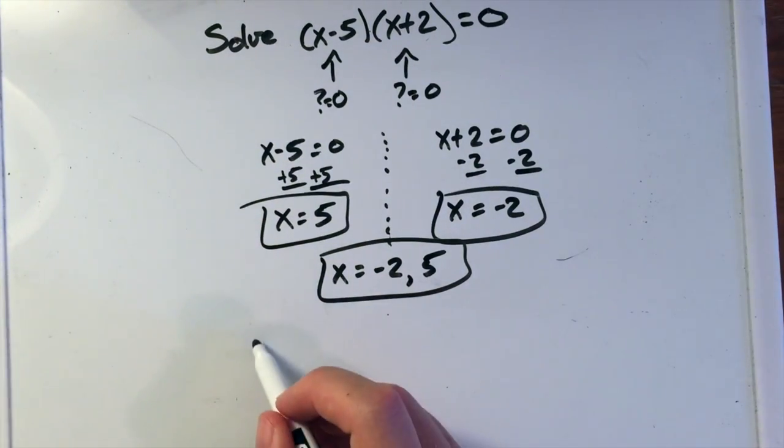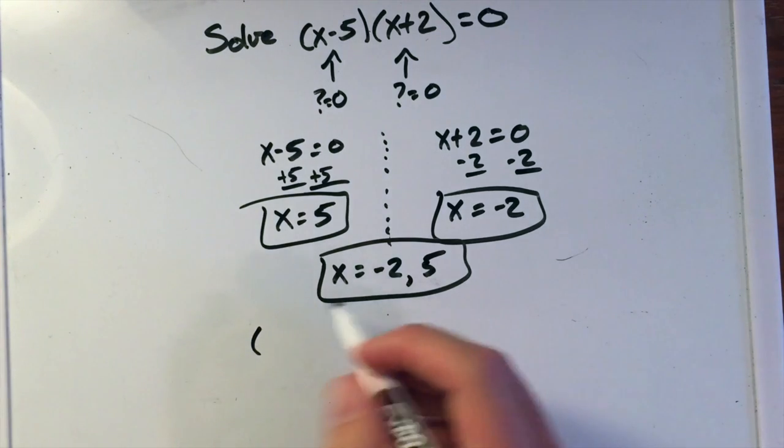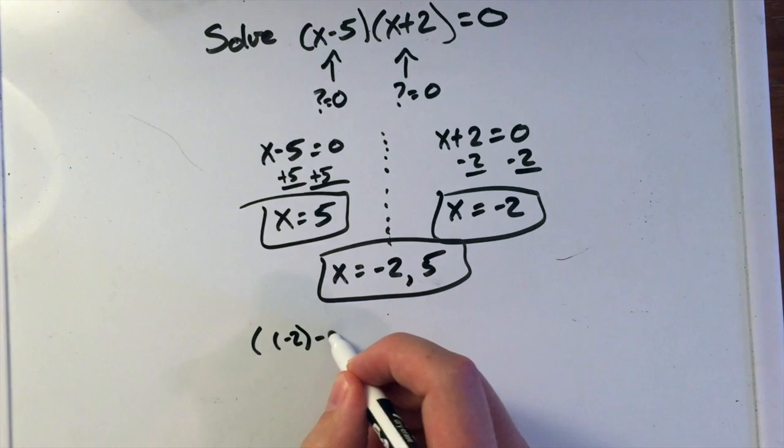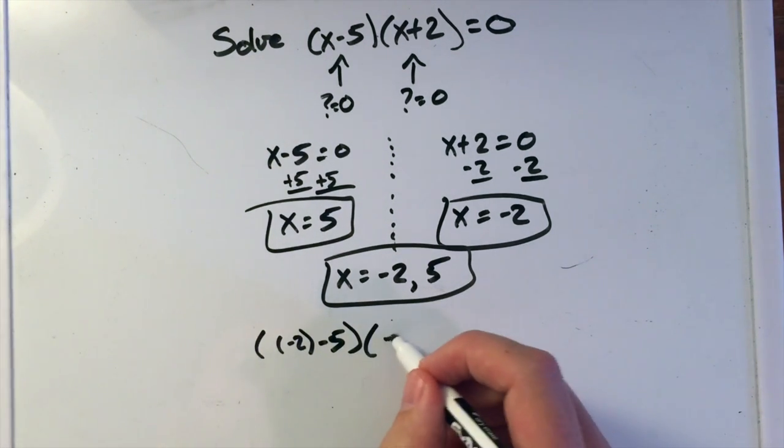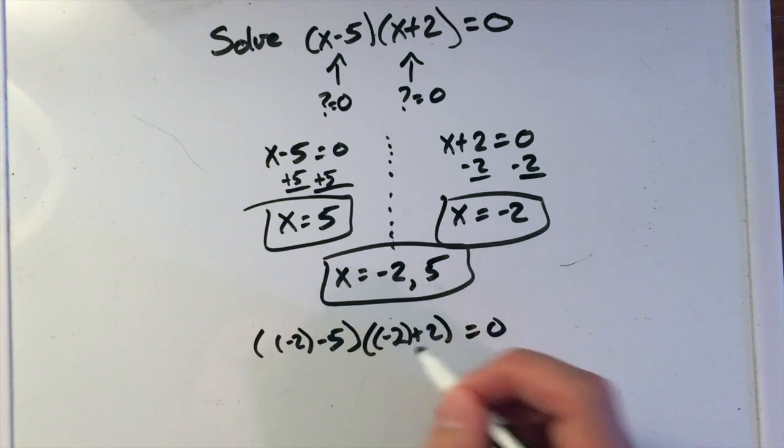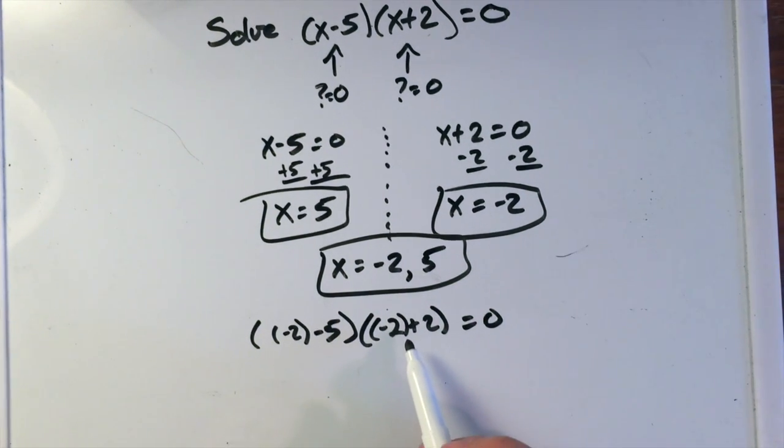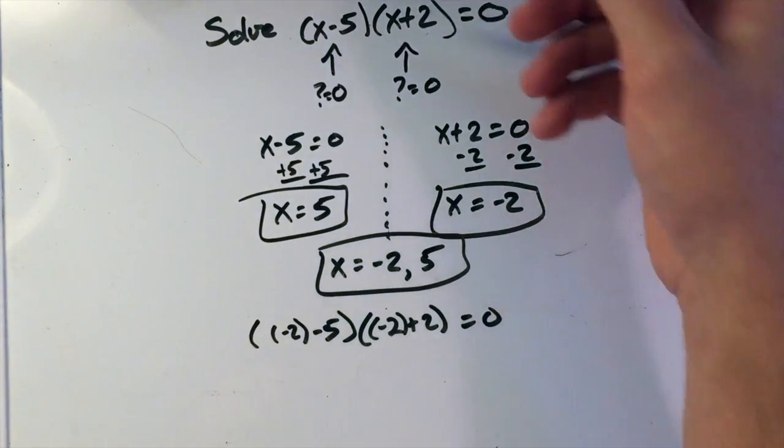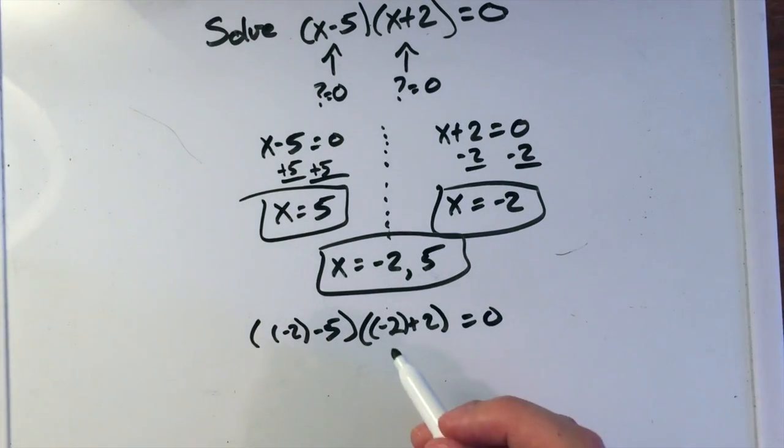So if we want to check our work really quickly, if I plug in, let's say negative 2 in for x, what do we get? Well, (-2)-5 times (-2)+2 equals 0. And what I like to do is any time I substitute something in for x, I put a parenthesis, and that lets me know that I'm substituting something in for x. It's kind of a little reminder for myself.